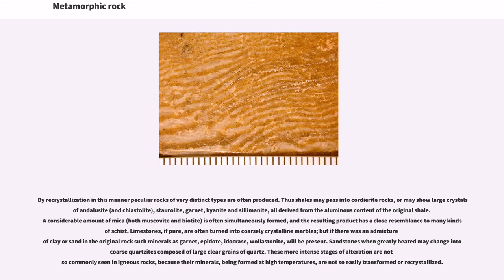By recrystallization in this manner, peculiar rocks of very distinct types are often produced. Thus shales may pass into cordierite rocks, or may show large crystals of andalusite, chiastolite, staurolite, garnet, kyanite and sillimanite, all derived from the aluminous content of the original shale. A considerable amount of mica, both muscovite and biotite, is often simultaneously formed, and the resulting product has a close resemblance to many kinds of schist.